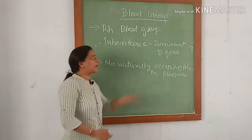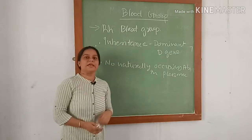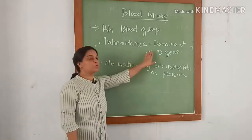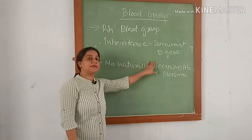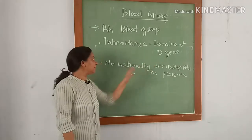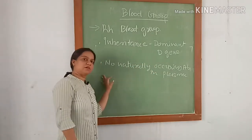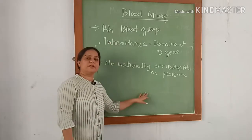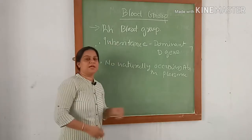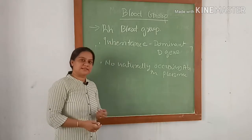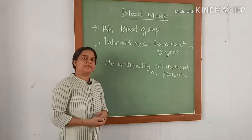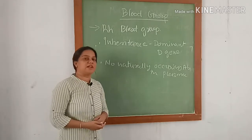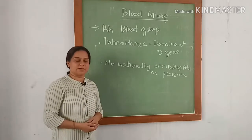Now, the RH blood group system. Inheritance of the RH blood group is through a dominant gene. There are no naturally occurring antibodies for this blood group in plasma. If the person gets sensitized, then RH antibodies will appear in the plasma.